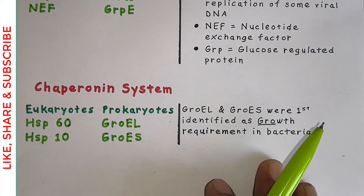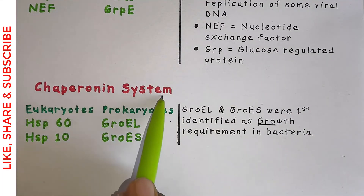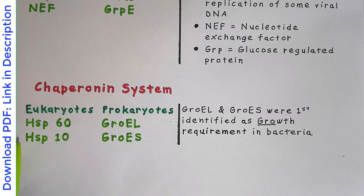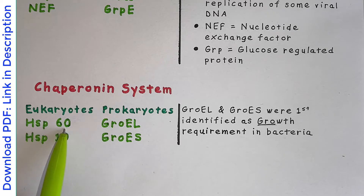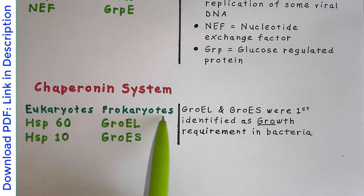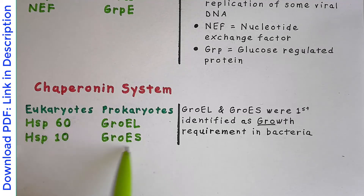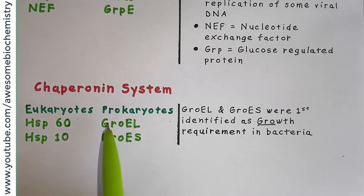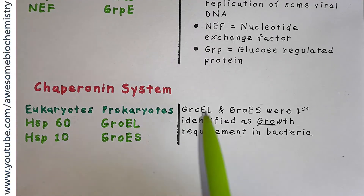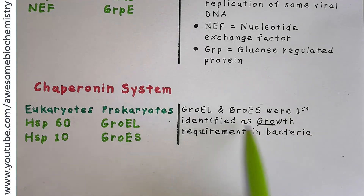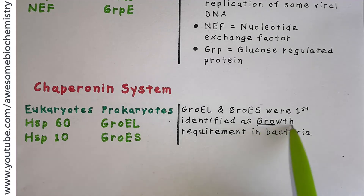Now let's discuss the second chaperone system — the chaperonin system. In eukaryotes, it is made up of two proteins: HSP60 and HSP10, which are heat shock proteins of 60 kilodaltons and 10 kilodaltons respectively. This chaperonin system is also found in prokaryotes, where it consists of GroEL and GroES. GroEL is homologous to eukaryotic HSP60 and GroES is homologous to HSP10. GroEL and GroES were first identified as growth requirements in bacteria, and the name GRO derives from that initial discovery.